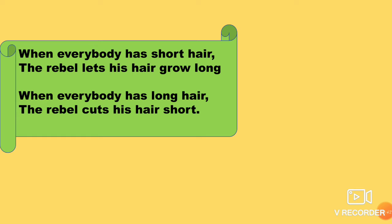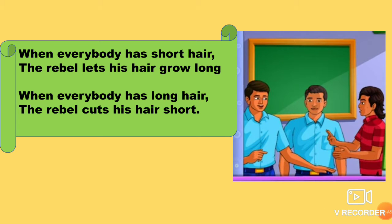When everybody has short hair, the rebel lets his hair grow long. When everybody has long hair, the rebel cuts his hair short. So as you see in the lines, it is very clearly given. When everybody has short hair, the rebel grows his hair long. As you see in the picture, you can see the difference — how other boys have cut their hair short and one person has long hair. This is what the rebel does — the opposite way.